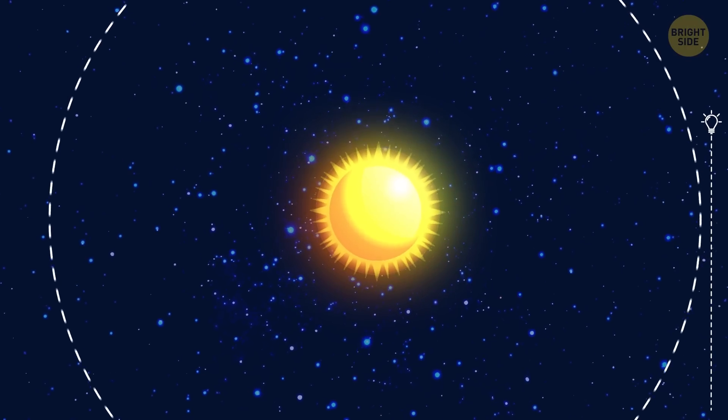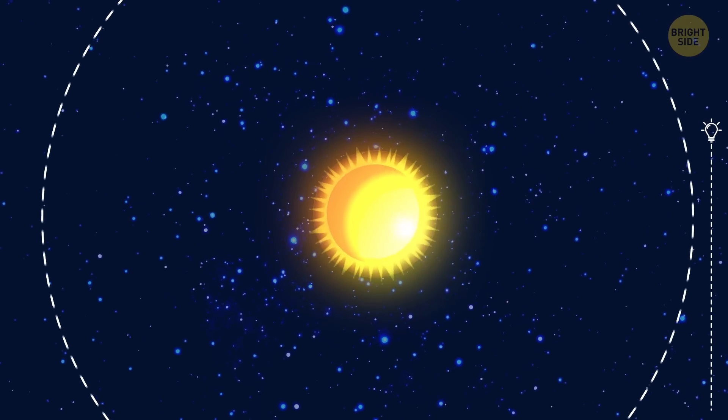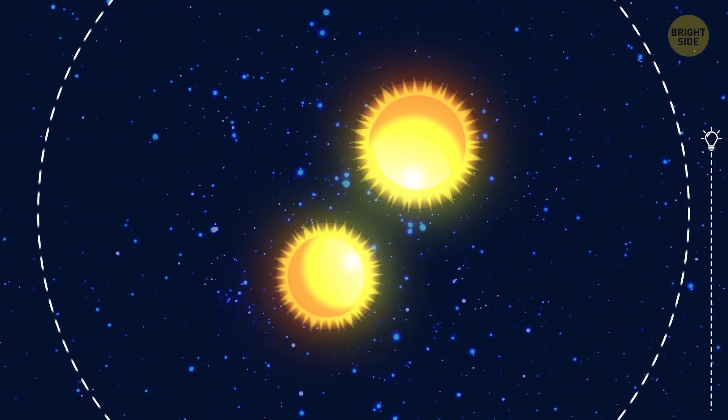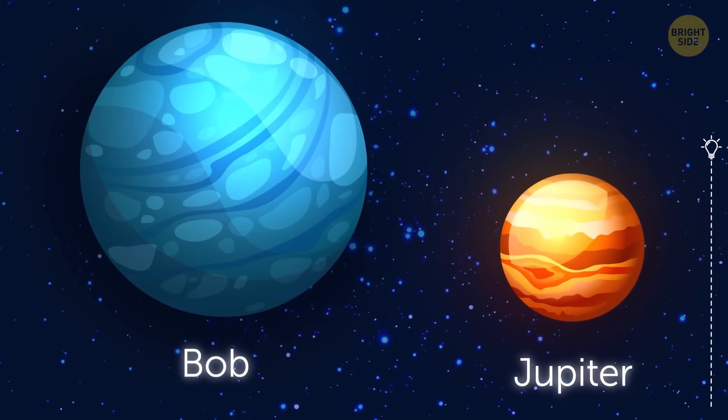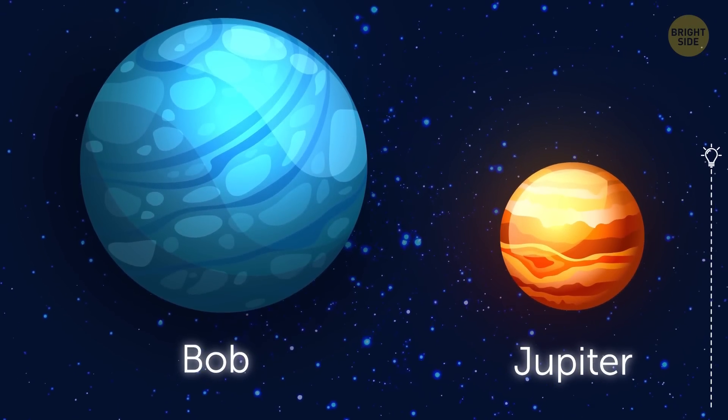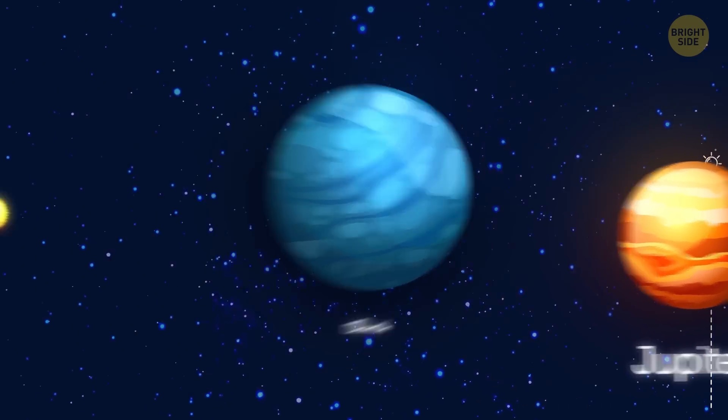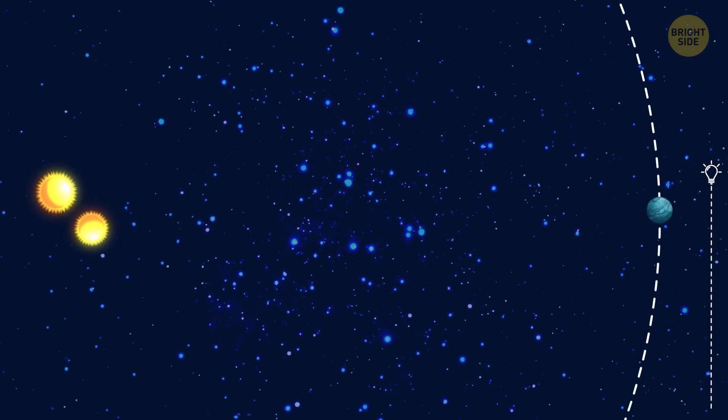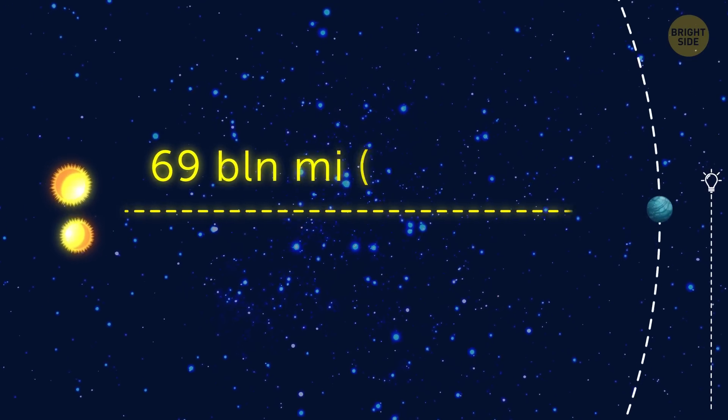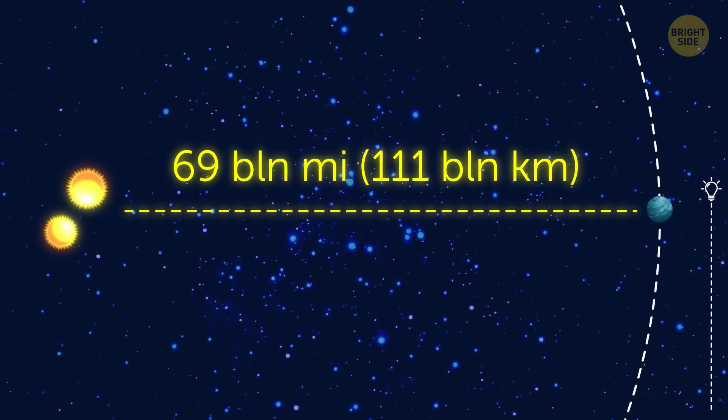Now, this planet is the only known companion orbiting not one star, but two stars at the same time. The planet, Bob, is 11 times more massive than Jupiter and is orbiting the binary star at an unimaginable distance. It's 69 billion miles away from the core of the system.